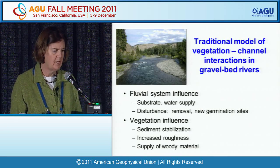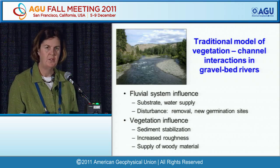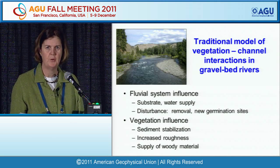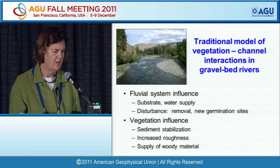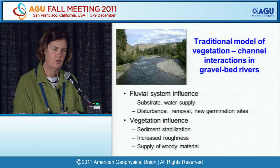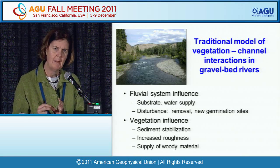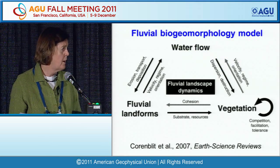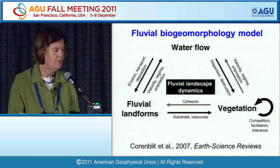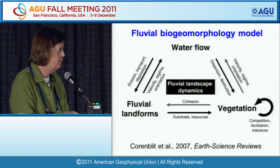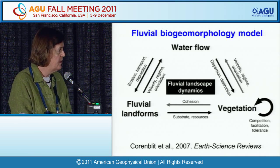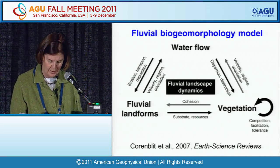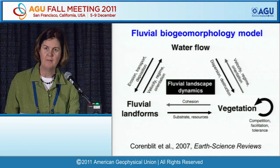In the traditional model of vegetation-channel interactions in gravel bed rivers, fluvial system influences dominate over vegetation influences. The fluvial system controls the substrate, uproots vegetation, and provides germination sites, with vegetation mostly affecting microsites — adding bank strength or roughness in particular locations. Around 2007, Kornblit and others introduced a fluvial biogeomorphology model that more explicitly places vegetation on a par with the other two controllers of the system, recognizing two-way pathways of influence between the components. This provides a useful framework for evaluating the relative effectiveness of these three components.